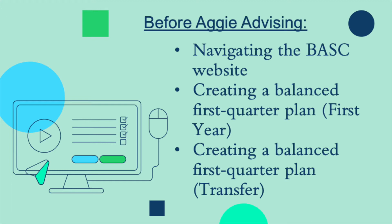Next, 'Creating a Balanced First Quarter Plan' for first-year students. You'll learn about which major courses to select during your first quarter, which includes a brief explanation about how AP/IB and placement scores can impact your schedule, along with how to use the OASIS academic plan feature.